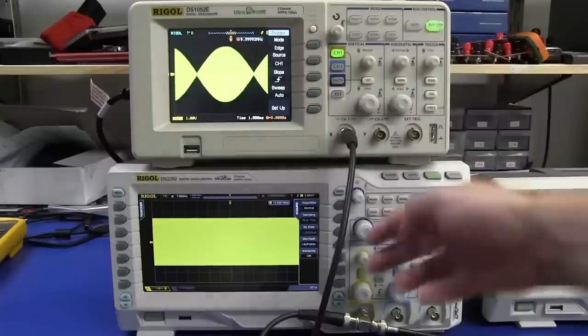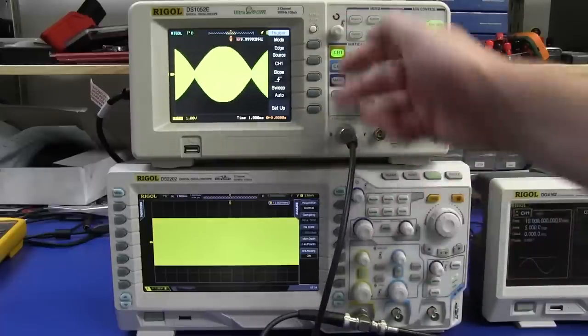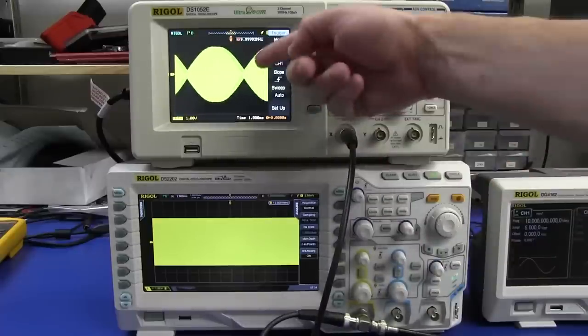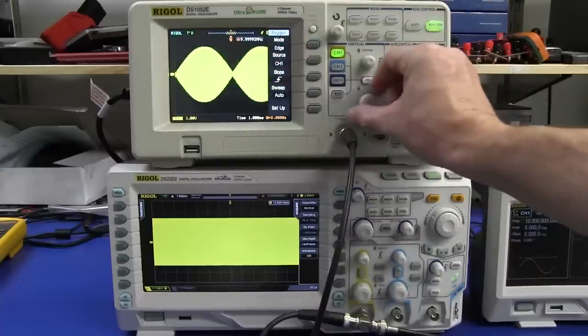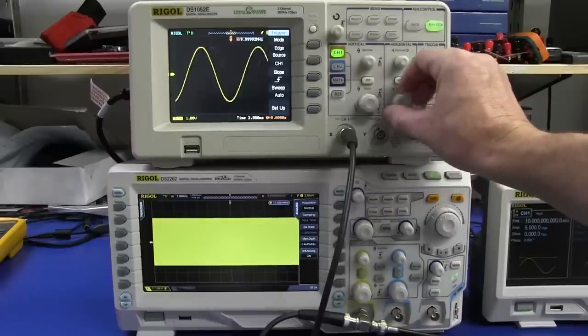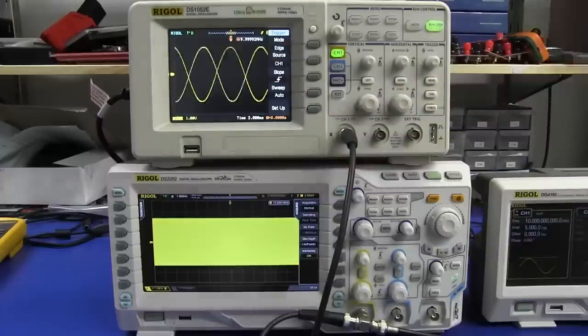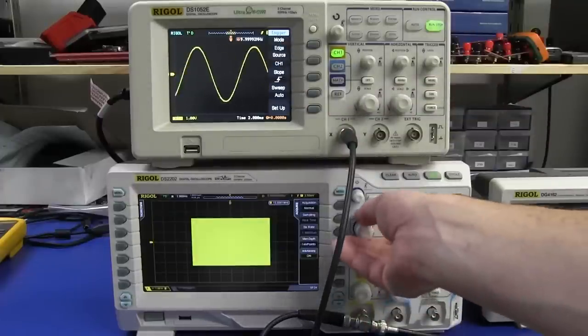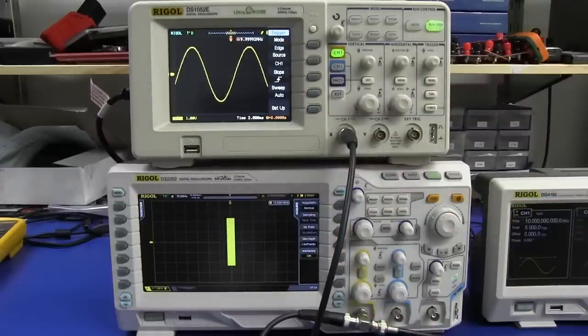So you can't alias like you can up here. I'm displaying a 10 megahertz signal on both of these. They're exact same time base. But look at the aliasing on this one. Absolutely horrible. Look at that. Hopeless. You won't ever see that on the 2000 series. Big bonus.